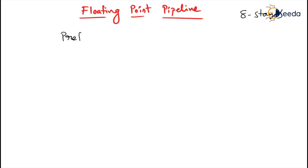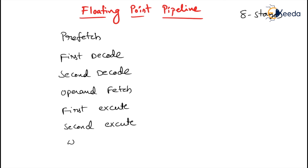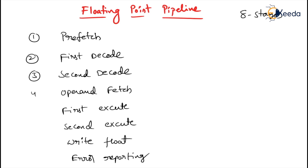The eight stages of the floating-point pipeline are: first, prefetch; second, first decode; third, second decode; fourth, operand fetch; fifth, first execute; sixth, second execute; seventh, write float; and eighth, error reporting.